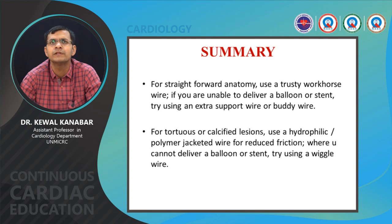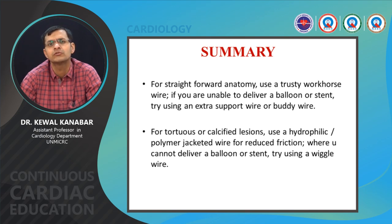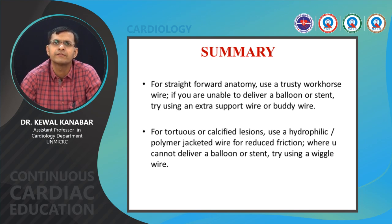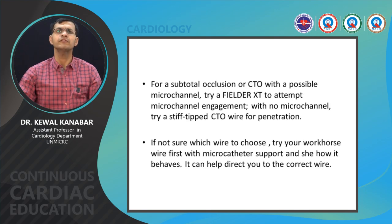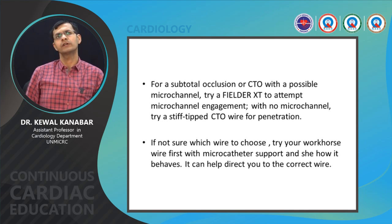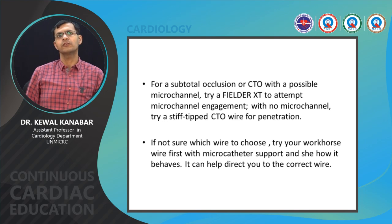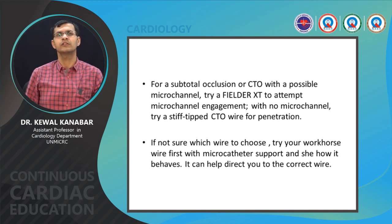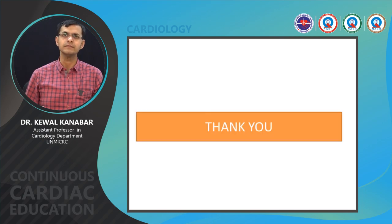In summary: for straightforward anatomy, use a routine workhorse wire — personal preference is BMW, Run-Through, or Sion Black; if it doesn't work, switch to Whisper or Pilot 50. For backup support, use a buddy wire or Whisper extra support wire. For calcified lesions, upfront start with a hydrophilic polymer coated wire like Whisper MS or Pilot 50 for reduced friction. For subtotal occlusion or CTO with micro channels, start with Fielder XT; without micro channels, go with a dedicated CTO wire like Gaia series, Miracle series, or Crossit series. Always use a micro catheter in CTOs for excellent backup and for exchanging guide wires.